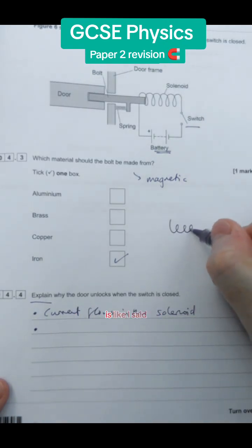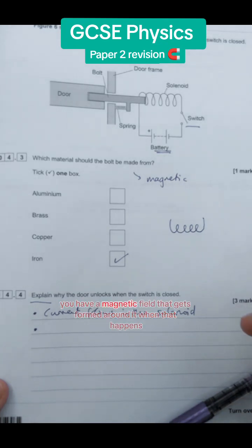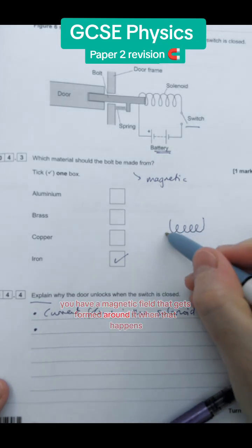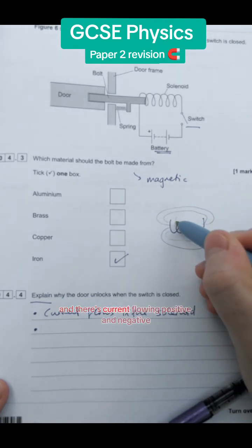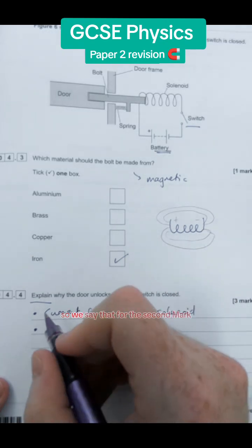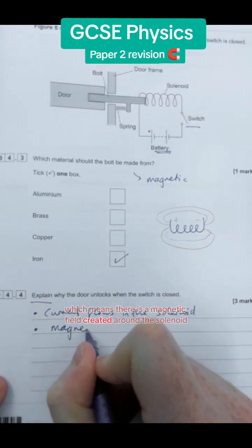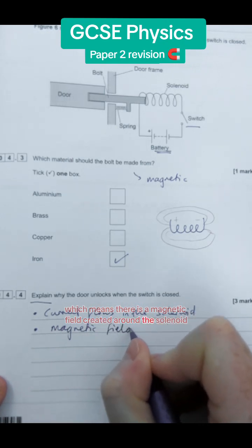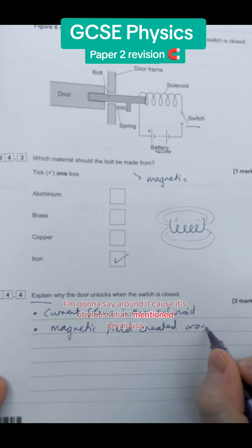Now when that happens very interesting things happen. In a solenoid, which is like I said a coil of wire with a current flowing through it, you have a magnetic field that gets formed around it when that happens. So as soon as you switch on the switch and there's current flowing positive and negative, you're going to have this magnetic field being formed around it. So we say that for our second mark, which means there is a magnetic field created around the solenoid.